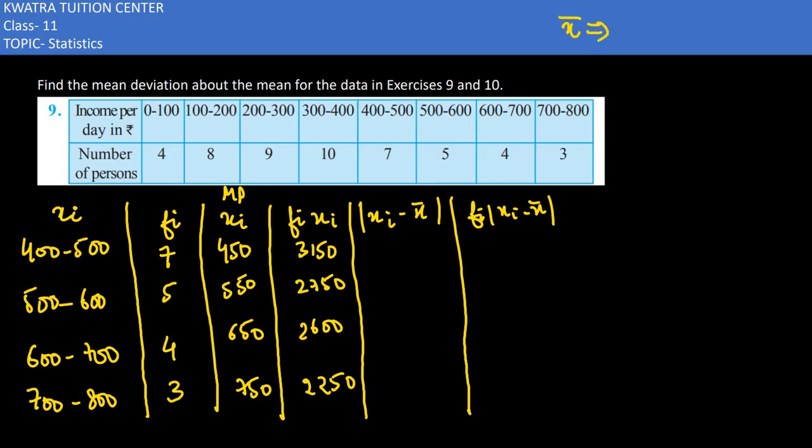Now what do we need to do in the next one? We have to find the total. We need to find mean. So we need to find summation f×x and summation f. Summation f: 4, 8, 9, 10, 7, 5, 4, 3. If we add these we get 50.